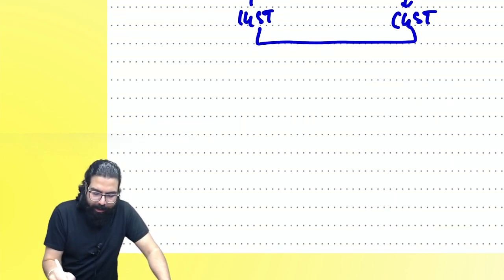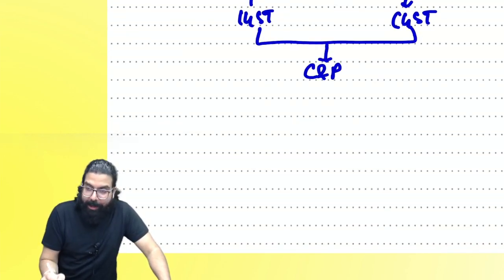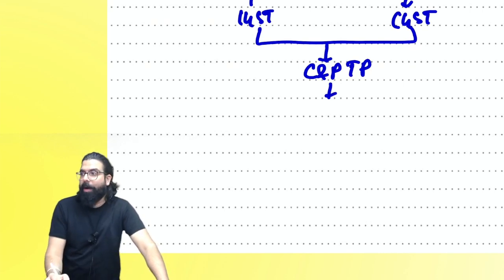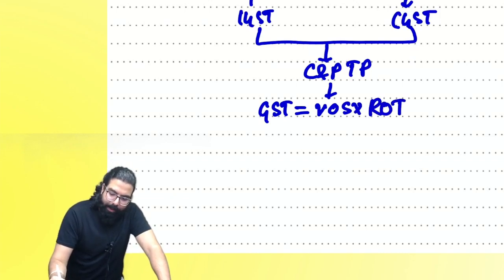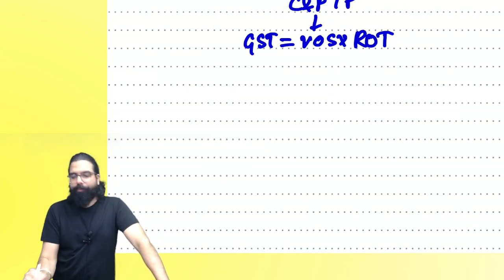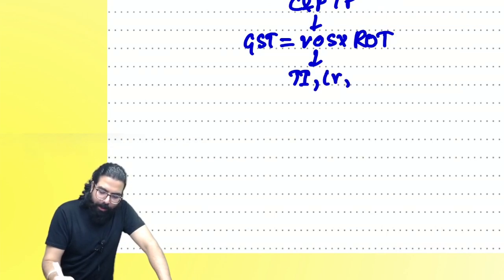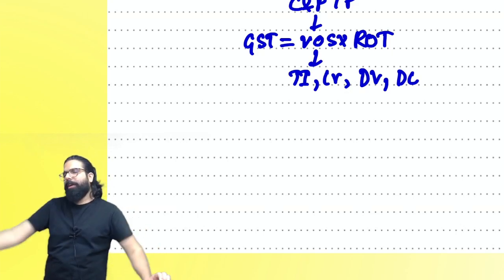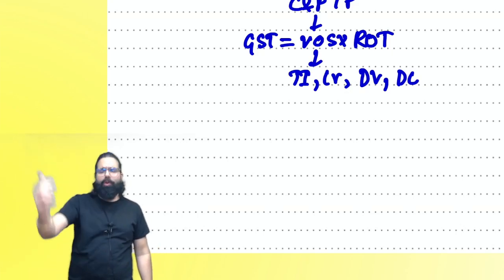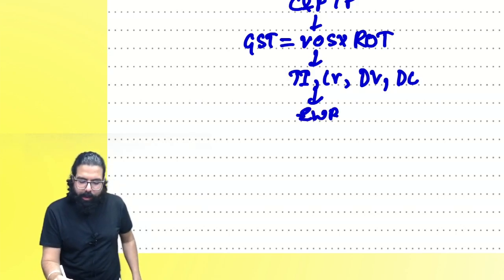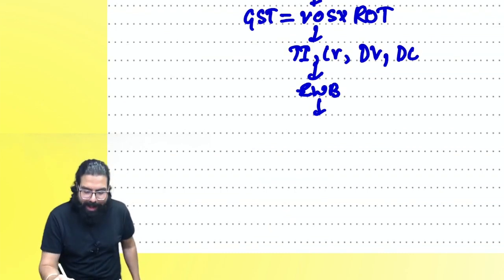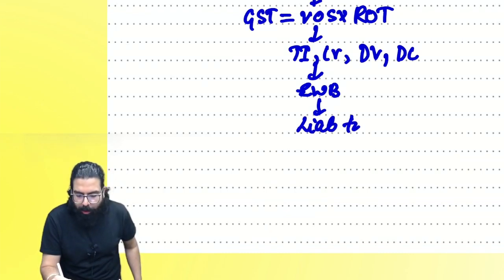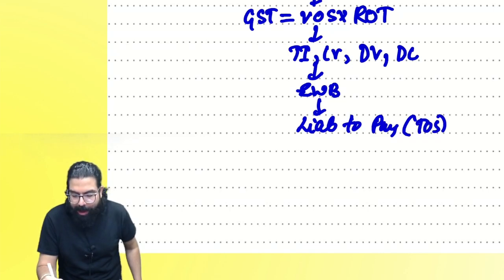Once GST is levied, it has to be collected and paid by a taxable person. He will calculate GST = value of supply × rate of tax. Once you know the value, you will issue the tax invoice, credit note, debit note, and delivery challan. After issuing those documents, you will issue an e-way bill.